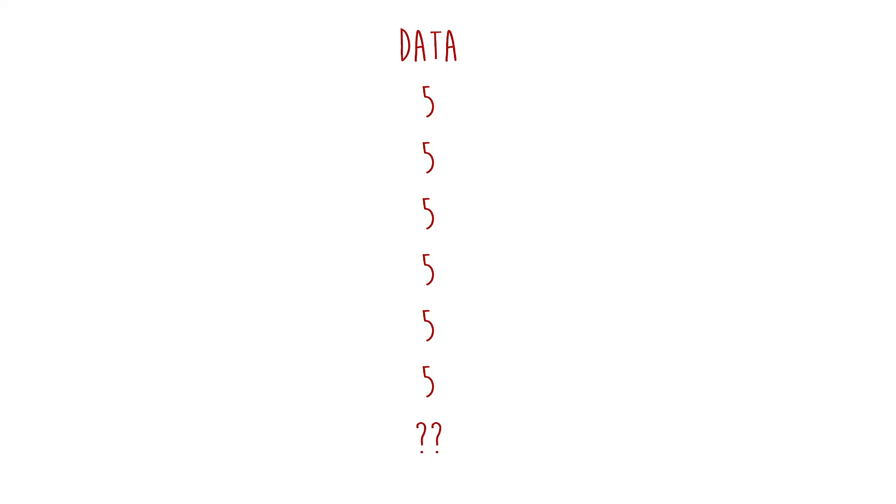Likewise, let's say we have a data set with seven numbers, and the mean of this data set equals five. If you know the first six numbers but not the last, and the first six numbers are all fives, what is the last number? It has to be five — it has no freedom to be anything else. Likewise, in our statistical models, when we estimate parameters, we constrain what the data values have to be. That's what the idea of degrees of freedom means.